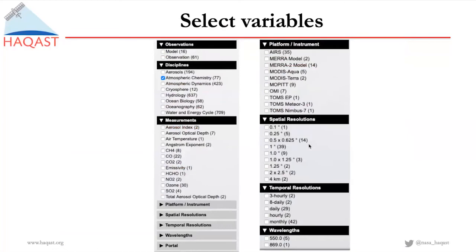In Giovanni there are more than thousands of variables you can plot, and Giovanni provides different ways to group and narrow down your search by clicking on different criteria. For example, if we are interested in plotting NO2, then NO2 is under atmospheric chemistry. So we select atmospheric chemistry, and remember that once you select one criterion, only the variables that satisfy that criterion will be shown. Under atmospheric chemistry we can see methane, CO, CO2, and nitrogen dioxide — which we can click on to show the variables satisfying this criterion.